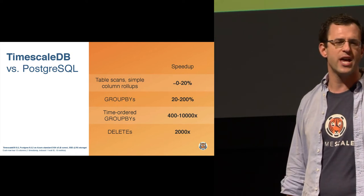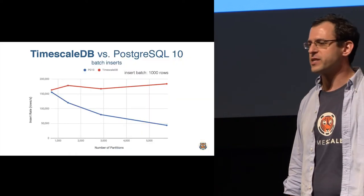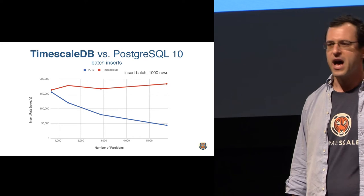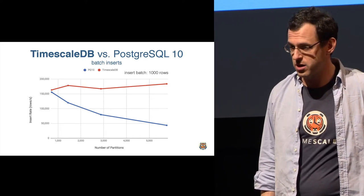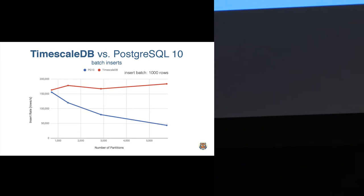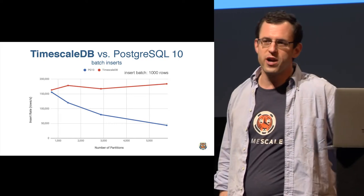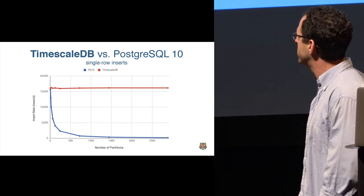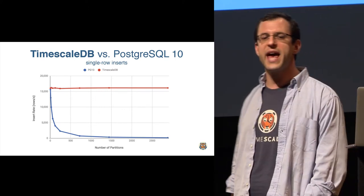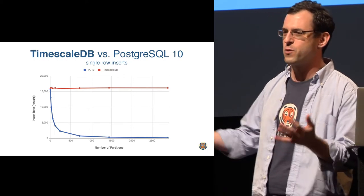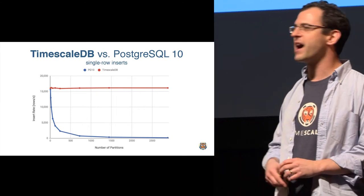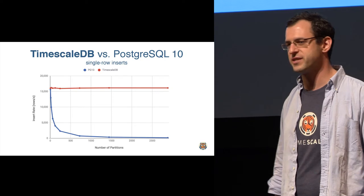Because timescale has semantic knowledge that these functions are operating on time and what they mean, we can get 10,000 times faster than native Postgres. Some of you might ask, what about Postgres 10? Hasn't Postgres 10 really improved things with declarative partitioning? Postgres 10 did indeed make things somewhat better. If you do batch inserts, the red line is timescale, the blue line is PG10. Or if you're trying single row inserts, Postgres 10 didn't really solve the problem.